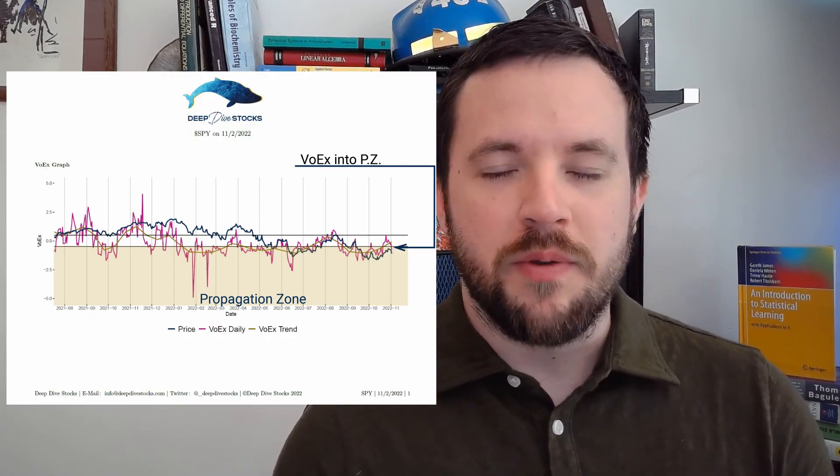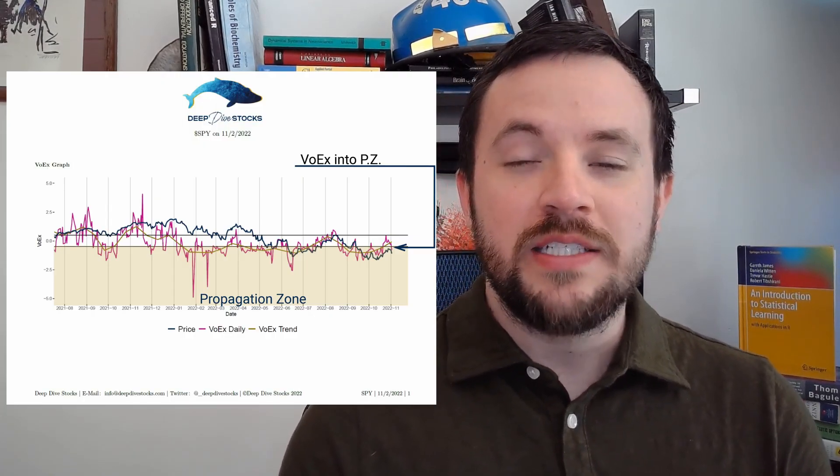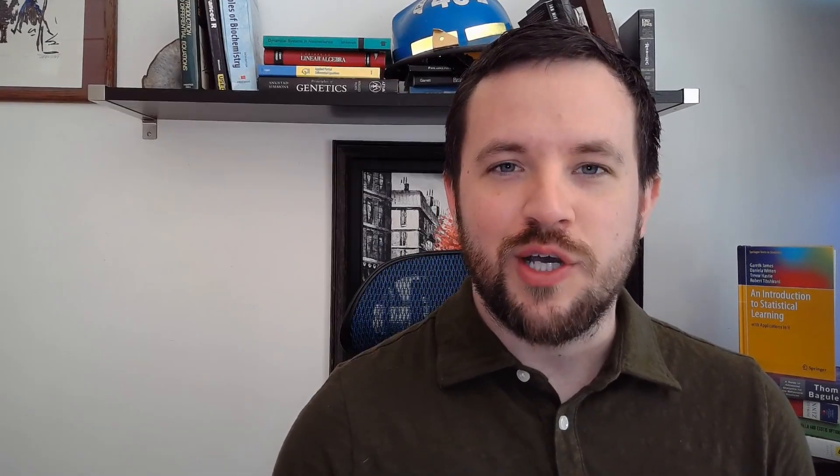Not only is it breaking from the pattern, but Vorex has found itself into the propagation zone, which is always worrisome if you have long outlooks on the market, because Vorex falling into the propagation zone is indicative of continued and persistent declines in price.